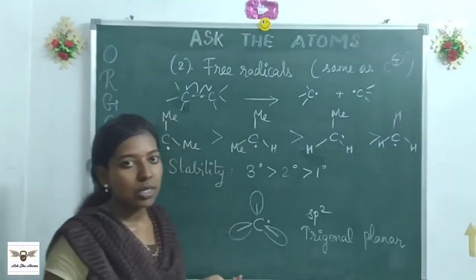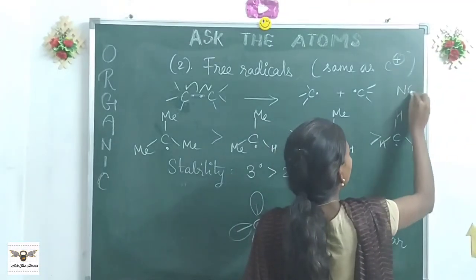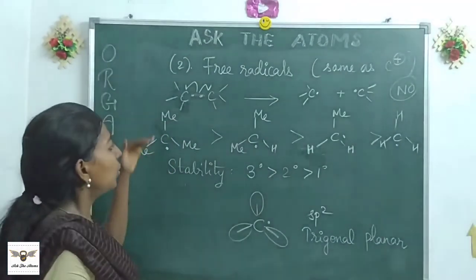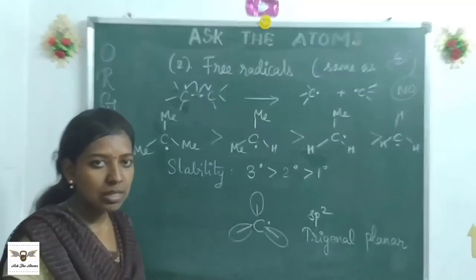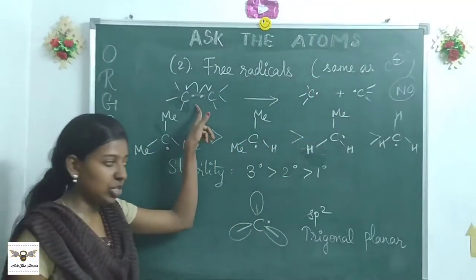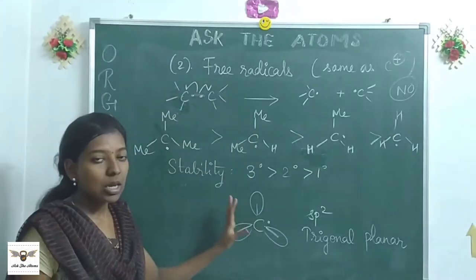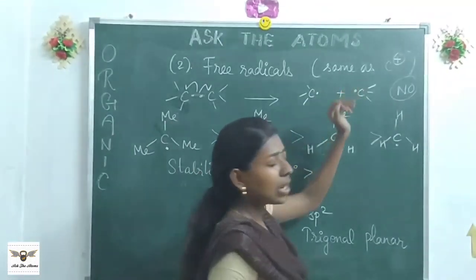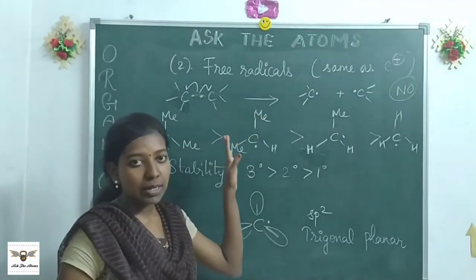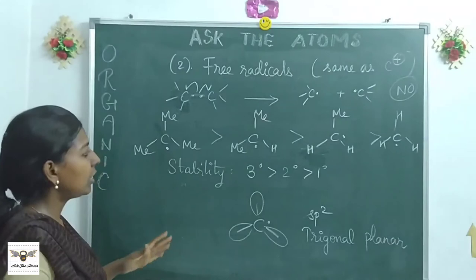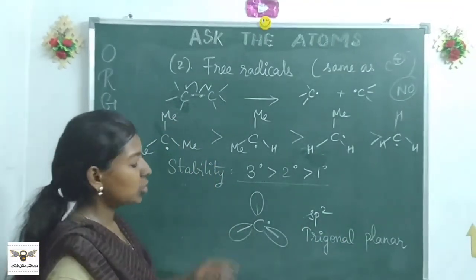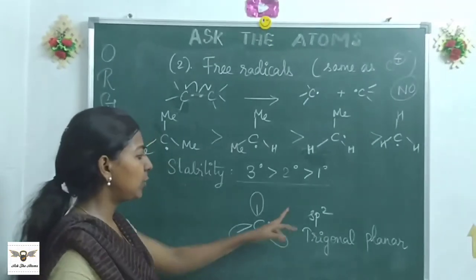For example, NO is a free radical because it has an odd electron. The structure of carbon free radicals is the same as carbocations — SP2 hybridized and trigonal planar — except that free radicals are produced by homolytic fission. The stability order is also the same: tertiary is more stable than secondary, which is more stable than primary.